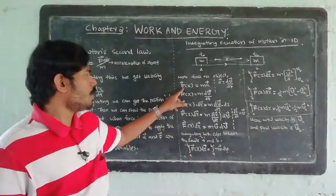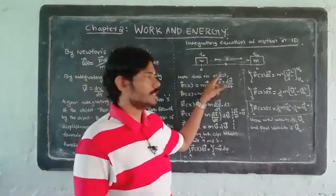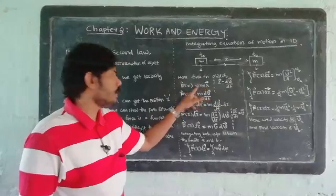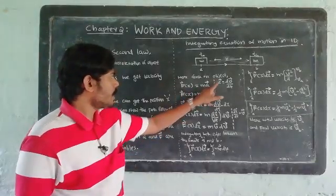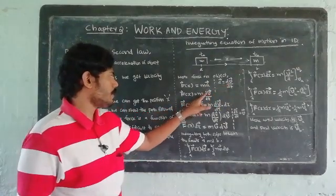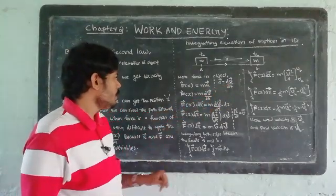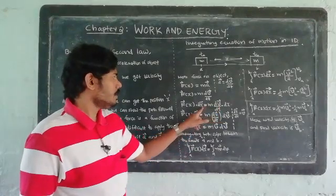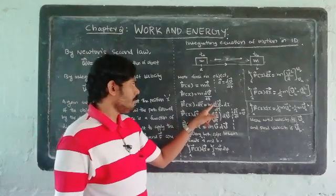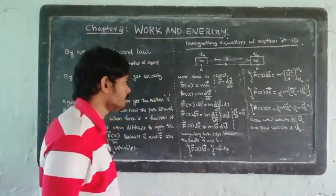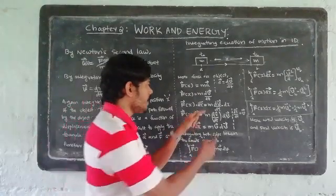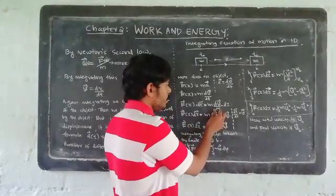By Newton's second law, the force on the object gives F(x) equals ma, which is m times dv/dt. The time rate of change of velocity is dv/dt. So F(x) equals m times dv/dt. Multiplying both sides by dx: F(x) dx equals m times dv/dt times dx.